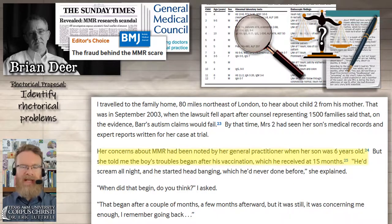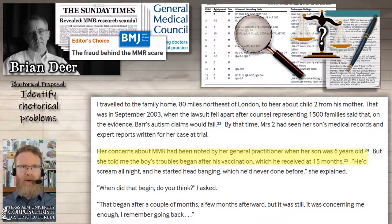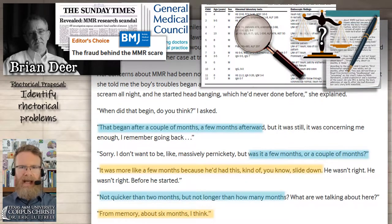There was no documentation of this child's symptoms until more than four years after supposedly the symptoms began. In her memory, she said the boy's troubles began after his vaccination, which he received at 15 months. She describes the symptoms the boy showed, which are indicative of autism: he started screaming all night, started headbanging, things he'd never done before. Brian Deere wanted to make sure he had as precise a timeline as possible, so he asked her when that began. She said it began after a couple of months, a few months.